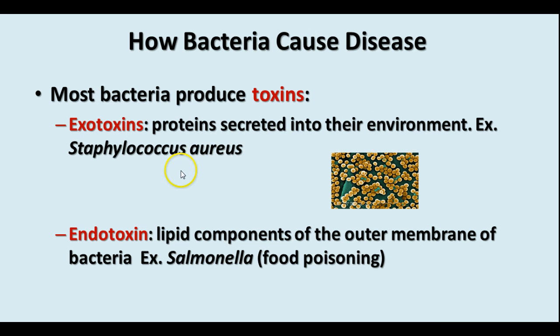Most bacteria produce toxins to make you sick — there are exotoxins and endotoxins. Exotoxins are secreted into the environment, like Staph aureus does when it makes you sick. Endotoxins affect the lipid components of the membrane — something like Salmonella that causes food poisoning.